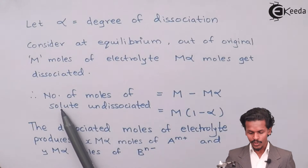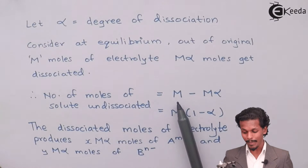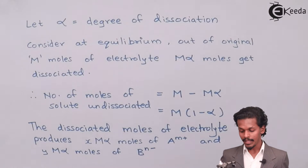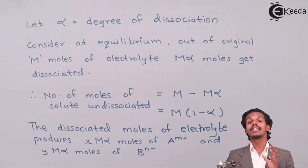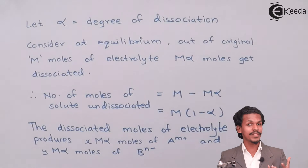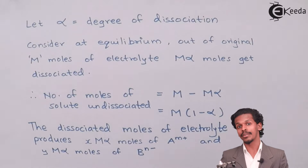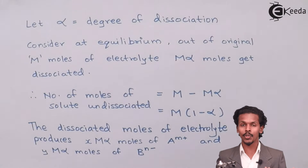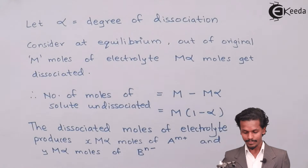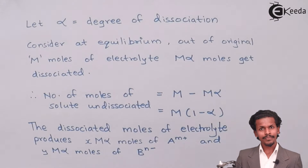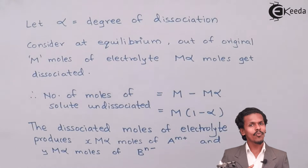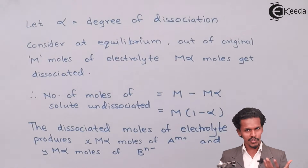The number of moles of solute which undergo dissociation is M·α. M is the original number of moles of electrolyte, and M·α is the part of the electrolyte that has undergone dissociation. What is left in the solution is the undissociated electrolyte, which is M(1 − α). Since M(1 − α) has not been dissociated, it remains in solution.